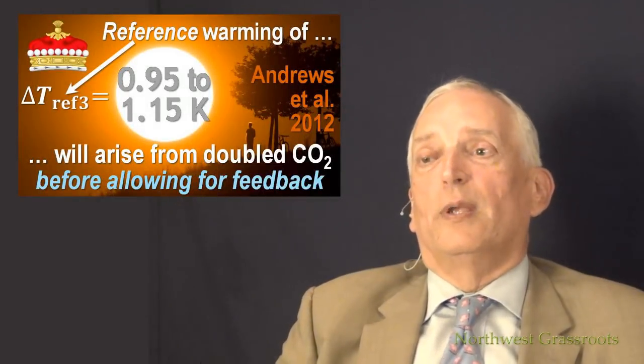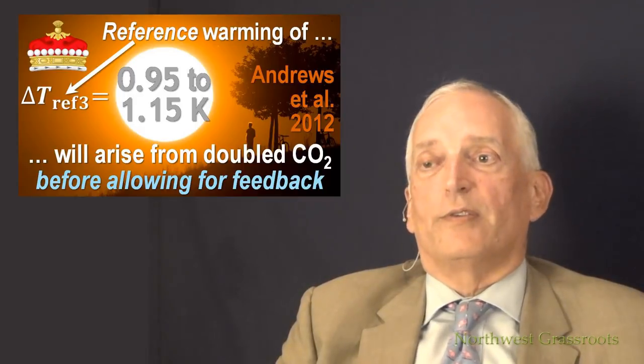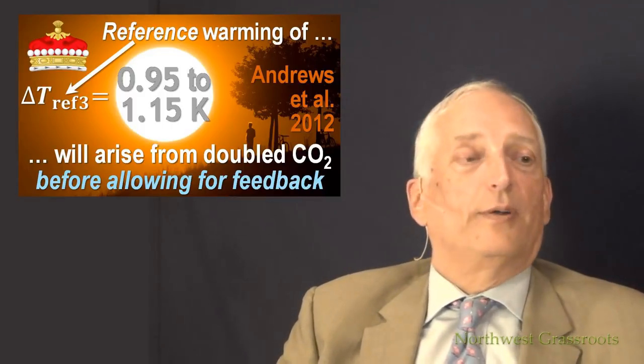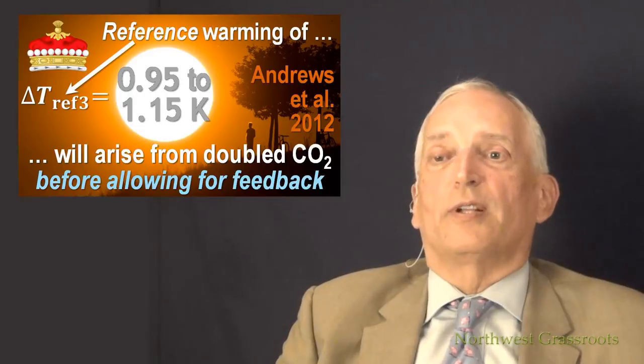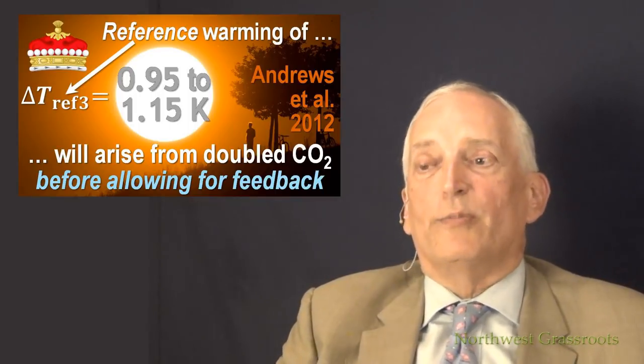This may sound a bit confusing, but I hope that as this unfolds it will become clearer. You will have to be fairly tough-minded in persisting through this, because it is an absolutely fascinating result that we come to at the end. In order to determine the equilibrium warming, we first have to find what's called the reference warming, which is the amount of warming that will happen before we take into account any feedbacks. If you double the CO2 concentration, and you don't take account of any feedbacks happening, then the reference warming is between 0.95 and 1.15 Kelvin, and that's an official climatological figure. This is mainstream science.